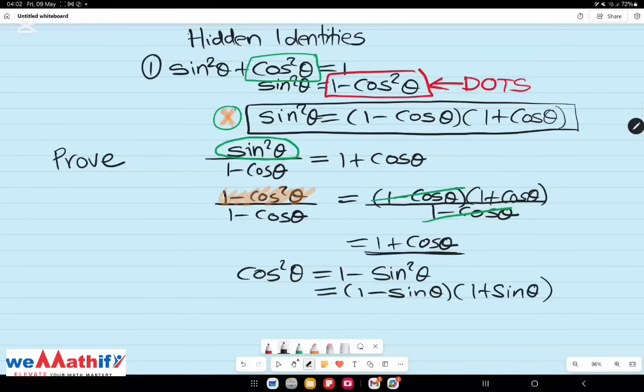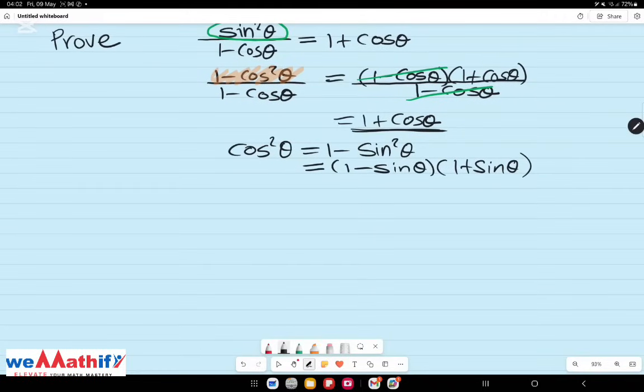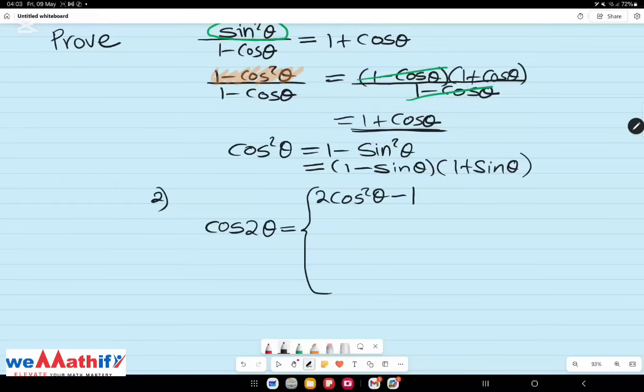and this particular one applies to matriculants. For cos 2 theta, we have the following three identities which are standard and can be found on the formula page. Cos 2 theta is equal to 2 cos squared theta minus 1 or 1 minus 2 sine squared theta. And finally, cos squared theta minus sine squared theta. These are the common ways of representing cos 2 theta.